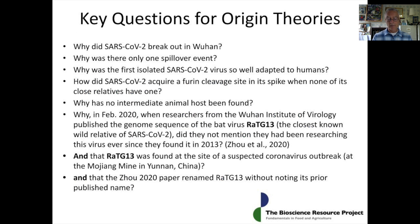Why is a lab origin being considered for COVID-19? In short, because the world's leading center for bat coronavirus research is in Wuhan and the closest known wild relative of SARS-2 came from a bat. Second, because the many zoonotic origin theories proposed to date, from frozen fish to pangolin intermediates, are not supported by significant evidence.